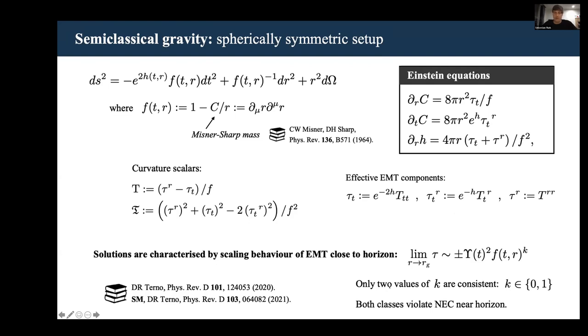It turns out there are only two specific values of k that are self-consistent, namely k equals 0 and k equals 1. Those are the only two classes of self-consistent dynamic solutions in spherical symmetry.